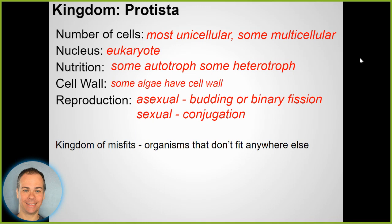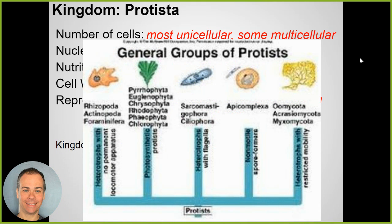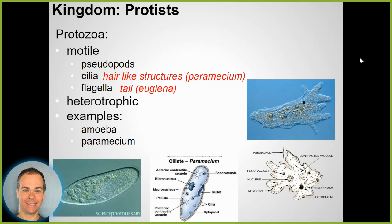They can reproduce asexually or sexually. The protist kingdom is kind of like a catch-all - scientists who study classification now say we probably should never have made this kingdom. It's just where things that don't fit into other groups get thrown. Scientists are redoing classification and don't do that anymore, but that's how the traditional kingdom of protista arose.